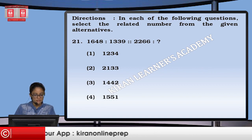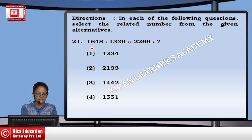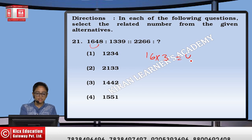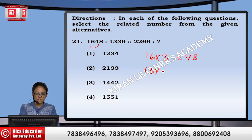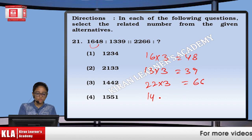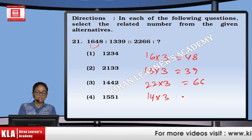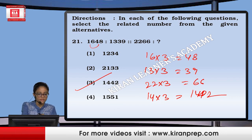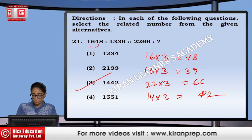Next, 16 is to 48. If we look around, 16 into 3 is 48, 13 into 3 is 39, and 22 into 3 is 66. Similarly, 14 into 3 is 42. That becomes the 3rd option.